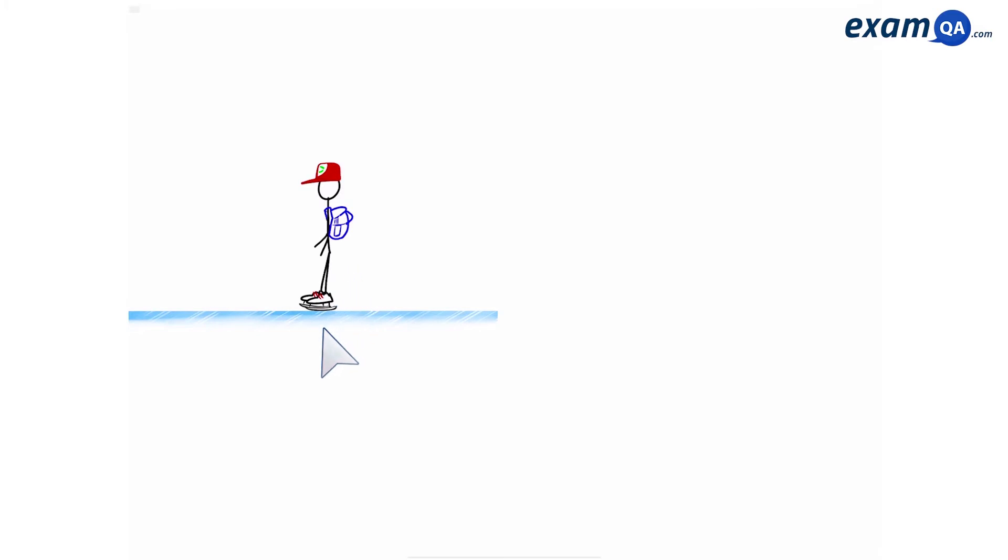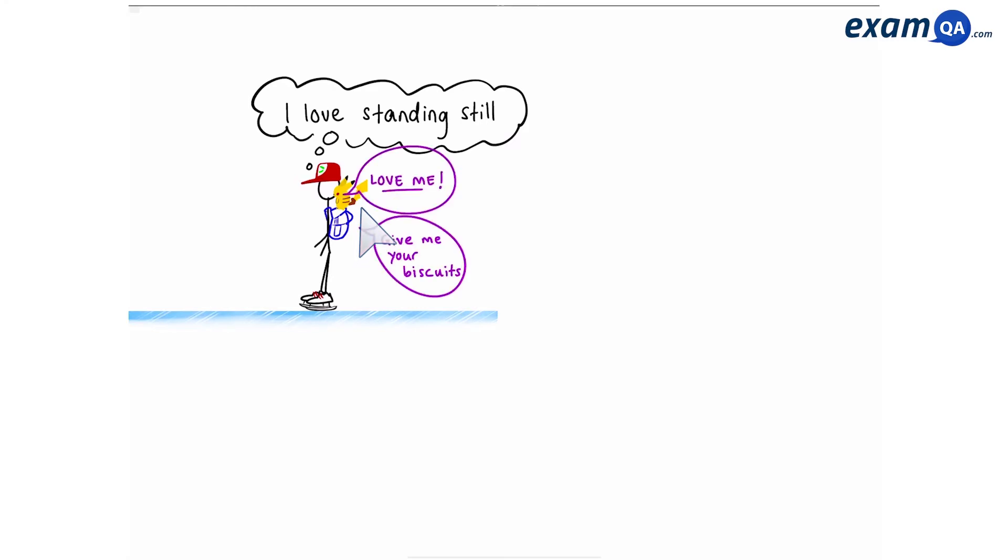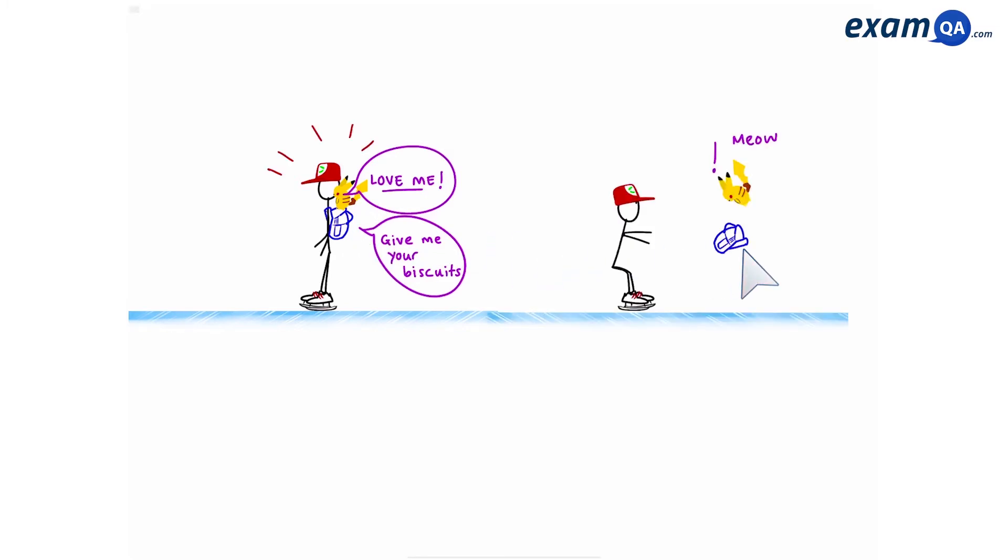So here we have a boy standing on ice, not moving at all. And let's say all of a sudden an animal appears on his shoulder. A very demanding animal. So the boy gets shocked and decides to throw his bag. So the bag and the boy move in opposite directions.